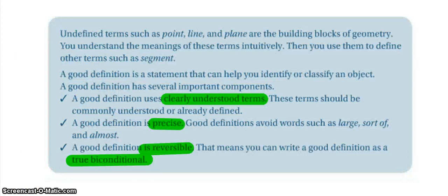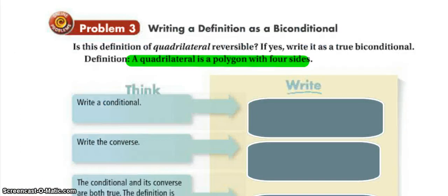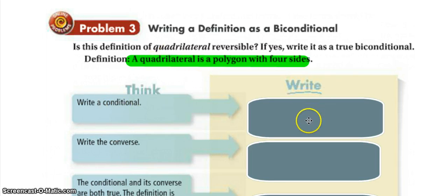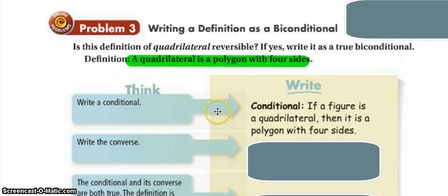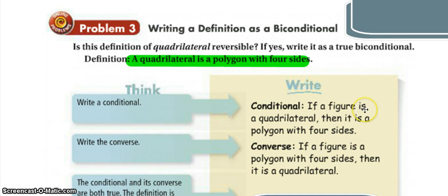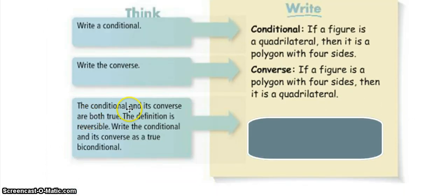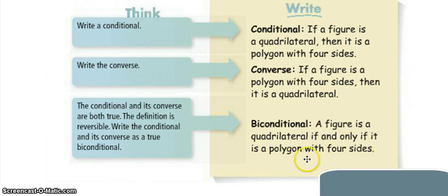Take a moment to pause the video for problem three. A quadrilateral is a polygon with four sides. We can write a conditional: if a figure is a quadrilateral, then it is a polygon with four sides — because 'quad' means four sides. The converse: if a figure is a polygon with four sides, then it is a quadrilateral. Both the conditional and its converse are true, so we can write the bi-conditional: a figure is a quadrilateral if and only if it is a polygon with four sides.